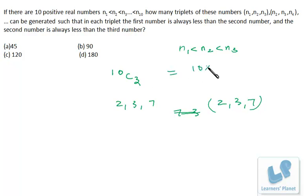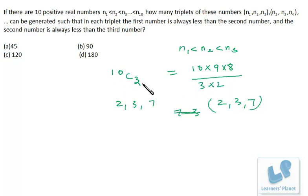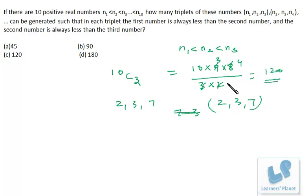So what is 10C3? It's 10 × 9 × 8 divided by 3 × 2 × 1. You go down three steps and divide by factorial 3. That gives us 120. This is the question from CAT 2002 — such a simple question, just a very simple logic. When you are choosing the triplets, you don't have to arrange them, since there is a single way of arranging the three numbers in ascending order.